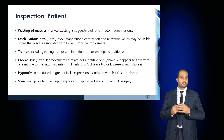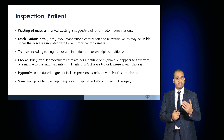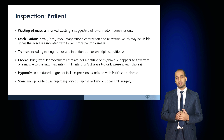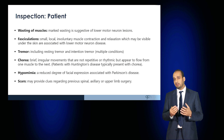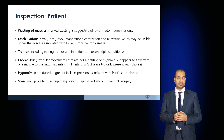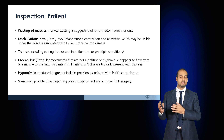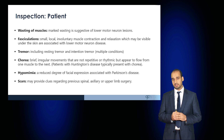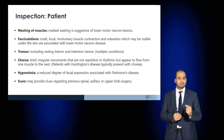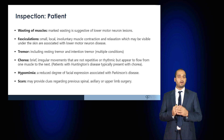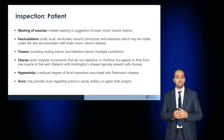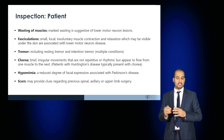Now move on to inspect the patient. Inspect the muscle groups carefully, looking for any signs of muscle wasting — marked wasting is associated with lower motor neuron lesions. Fasciculations are small involuntary muscle contractions and relaxations which may be visible under the skin and are a sign of lower motor neuron disease.